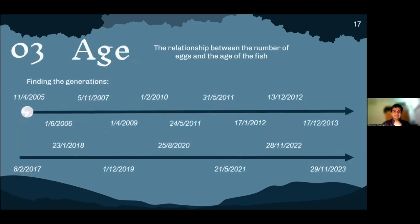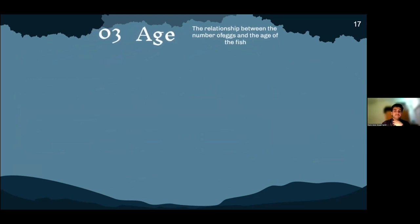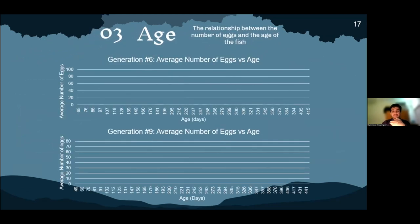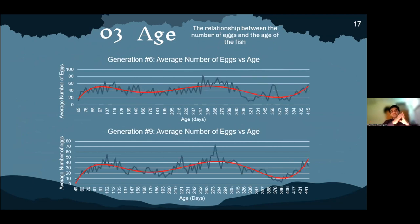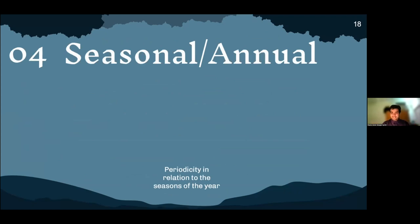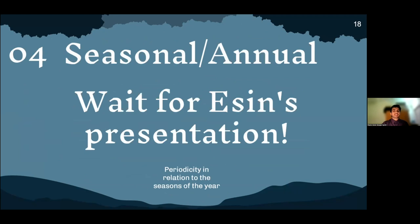The next analysis was the age analysis. I found that there were 17 generations of fish — some generations lived longer than others, or for some reason there were no records for them. We found that some generations present a periodicity of great amplitude through their life, in relation to the number of eggs produced at a given age. For the moment, we don't know the reason behind this periodicity. My partner in this project used the data filtered in this analysis for the seasonal annual analysis, and I invite you to wait for her presentation to hear her results.